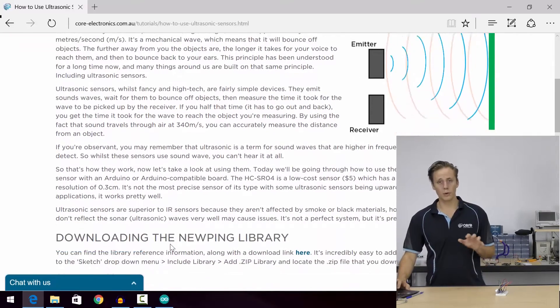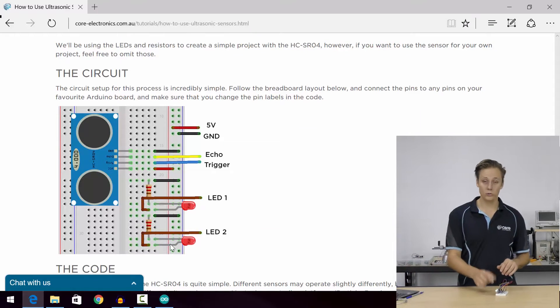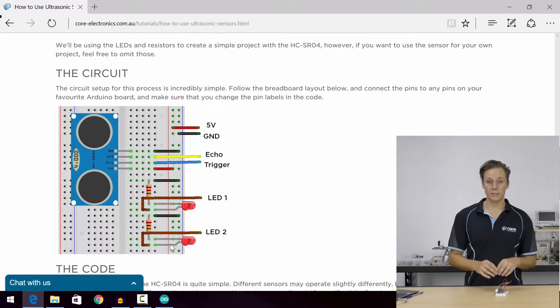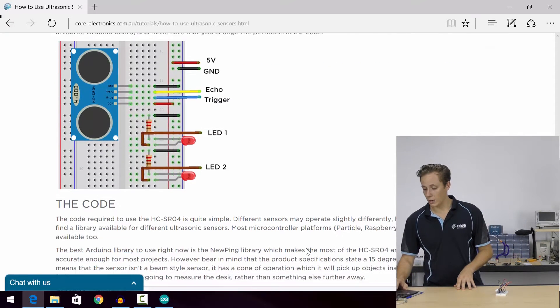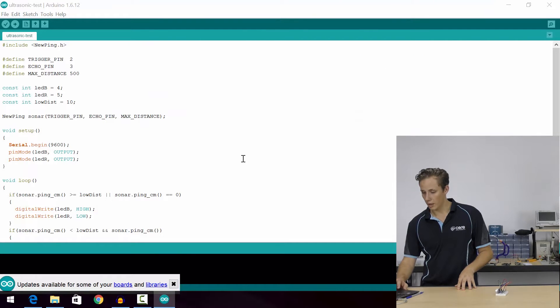Wire up your breadboard. We've got the circuit diagram down here, as you can see. So you'll need the ultrasonic sensor, the Arduino board, a few LEDs, some resistors, some jumper wires, and away you go. Now the code for this is really quite simple. I'll go to the Arduino IDE.